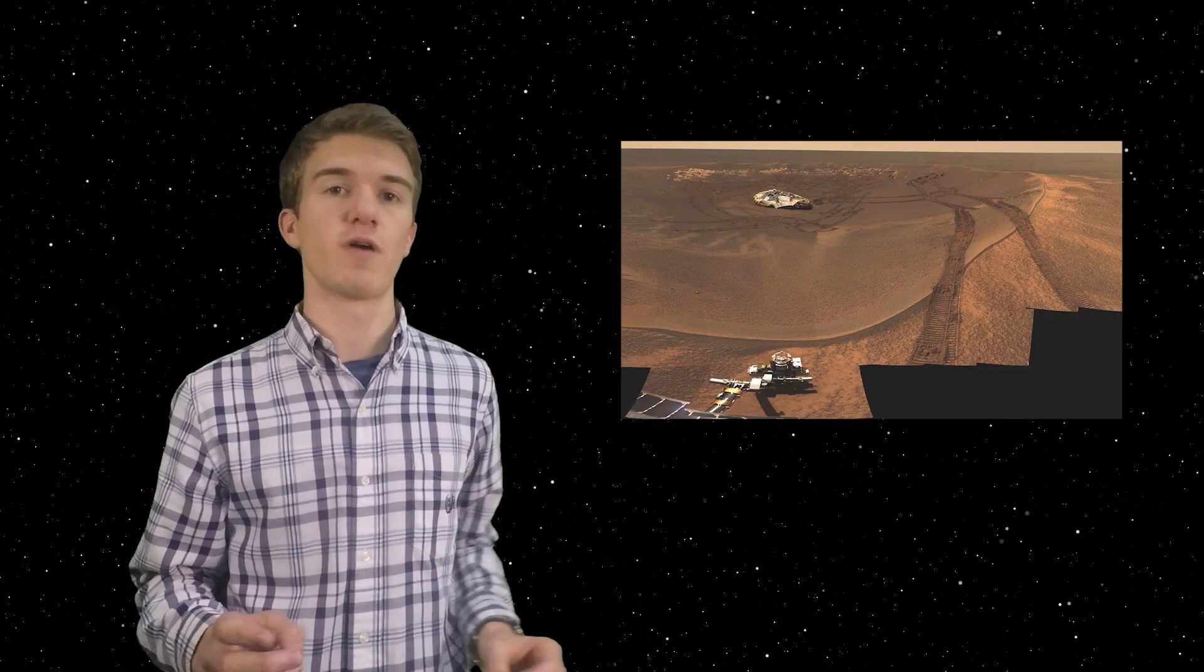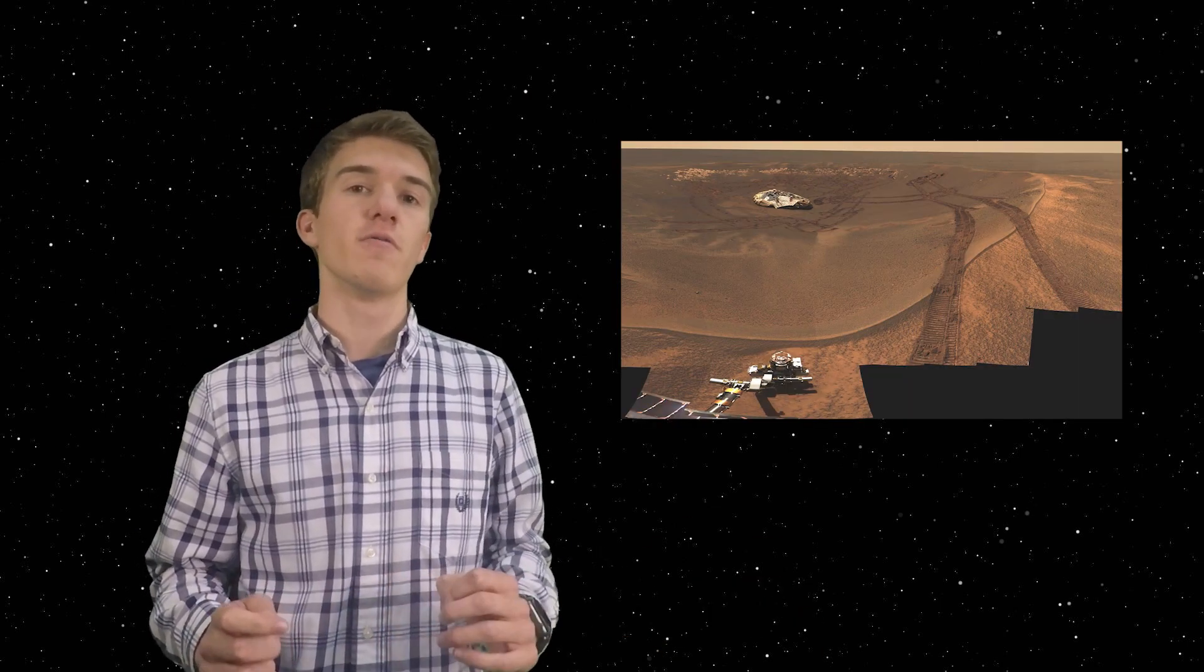After Opportunity had left the Eagle crater, it went out into the plains around it, and one of the first things that it did was it used its wheel to actually dig up some of the sand that was underneath. And what happened once it did this is it uncovered some shiny round pebbles that you see now that had never been imaged before.